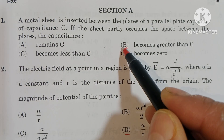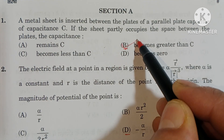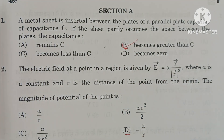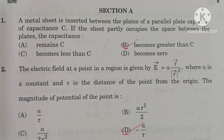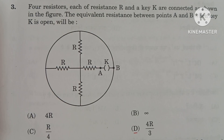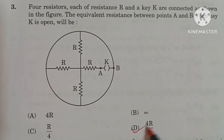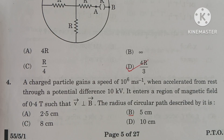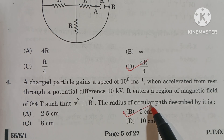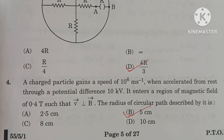In question number 1, B option is the correct option. In question number 2, D option is the correct option. In question number 3, D option is the correct option. In question number 4, B option is the correct option.